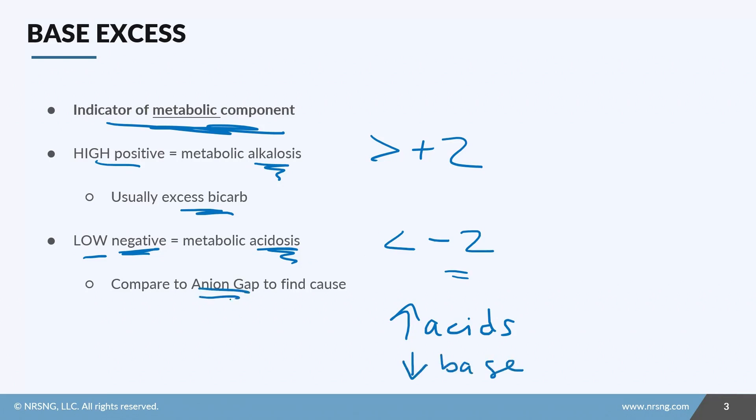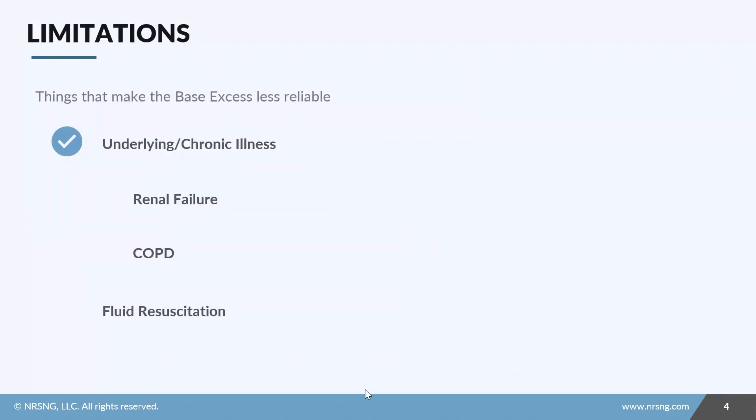So the trick here is if you see an anion gap, you know that there are extra acids floating around in our blood that we're not able to measure, and therefore that is the likely cause. If you don't have an anion gap, there's a good chance that this condition is caused by a loss of base, such as in diarrhea.